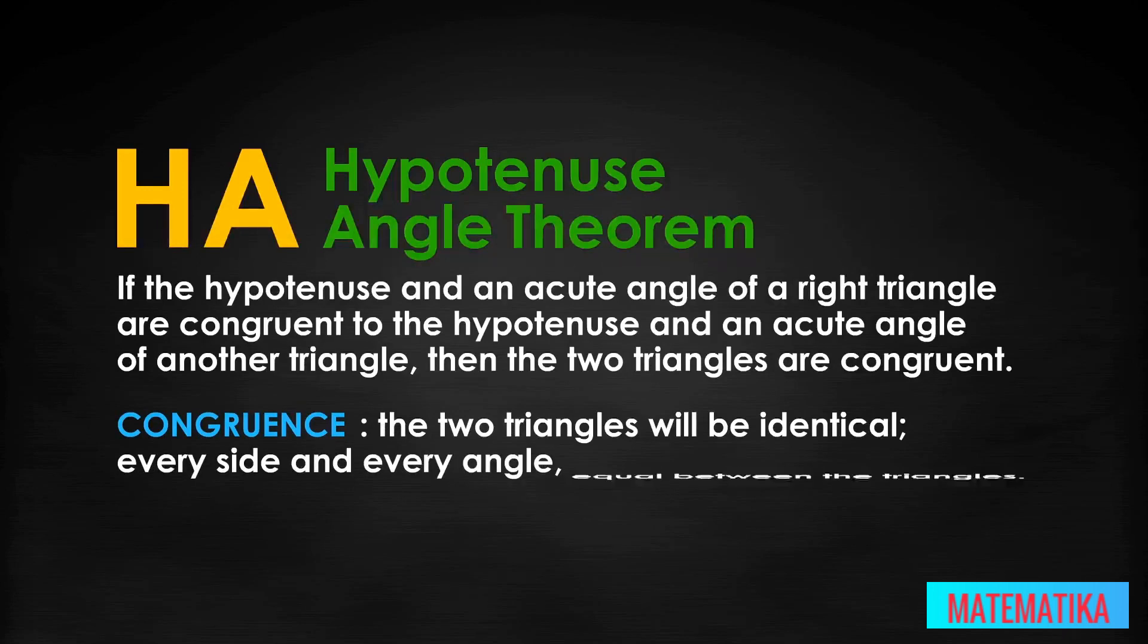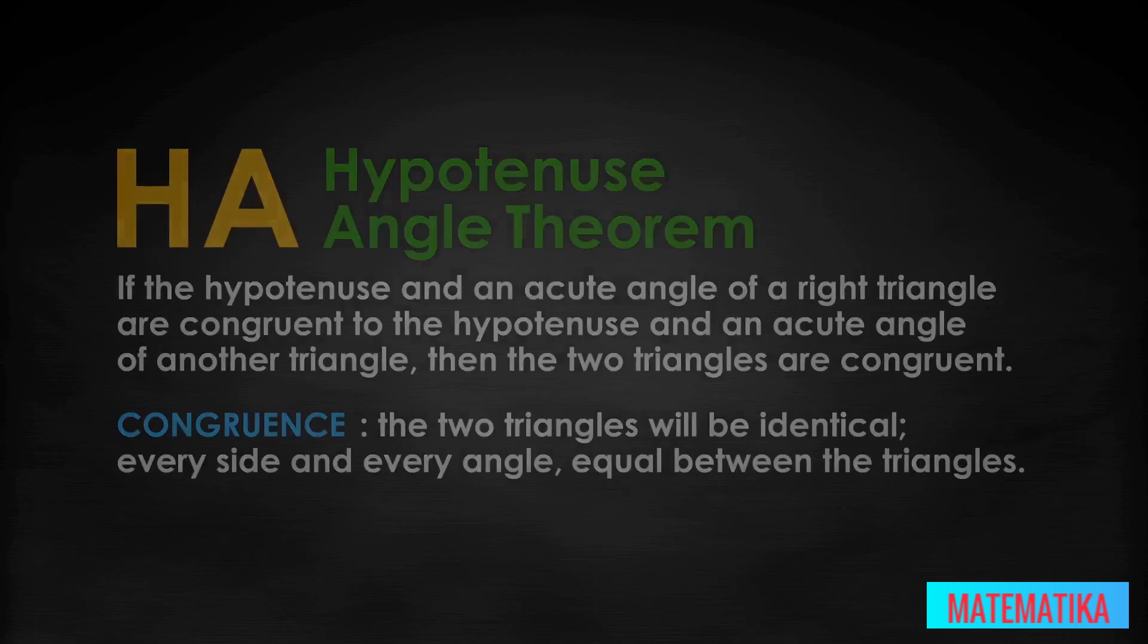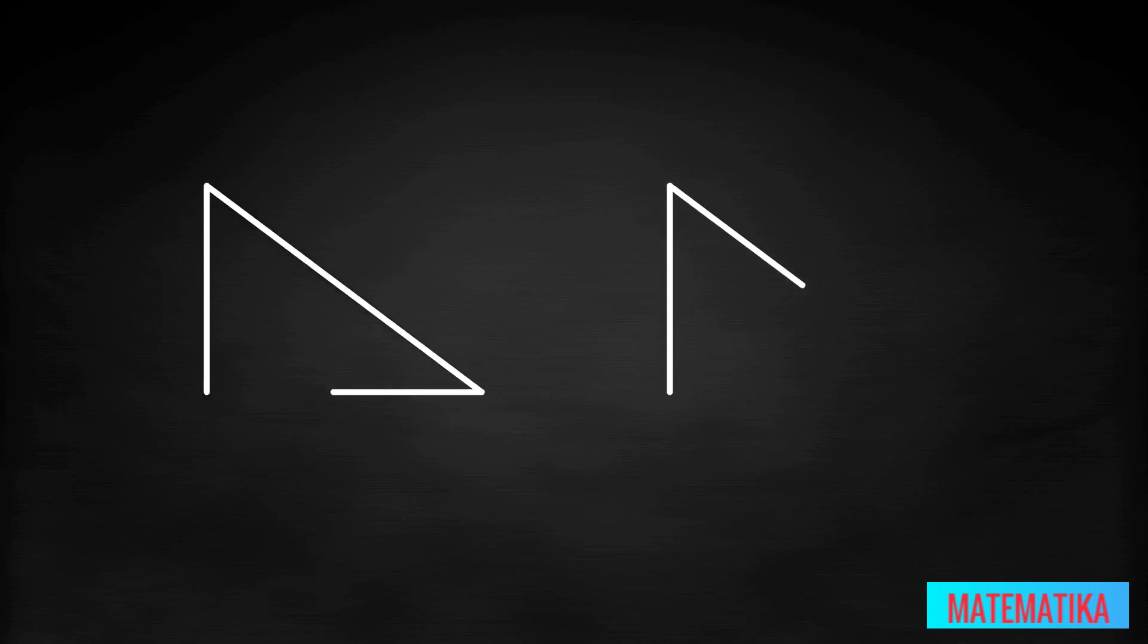Here are two right triangles, triangle ZAP and triangle HOT. They are both facing with their hypotenuses to the right. Notice angle A and angle O are right angles, indicated by the little square tucked into the interior angles.